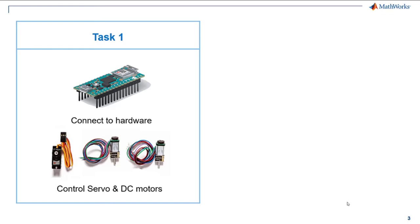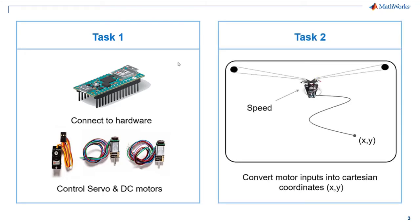Once we are done with the basic control, in task 2 we will move the drawing robot by giving low-level commands to the motors and we will convert those motor inputs into Cartesian coordinates.